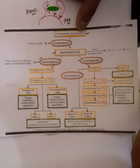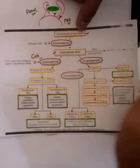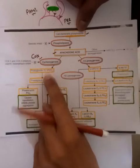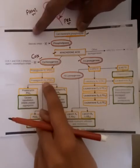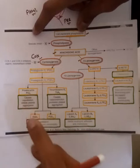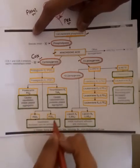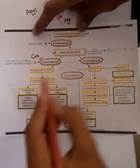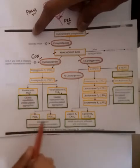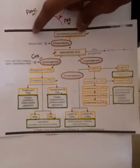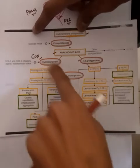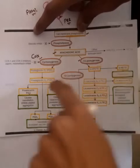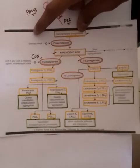The cyclooxygenase (COX) enzyme converts arachidonic acid into prostaglandin G2, which is converted into prostaglandin H2. Prostaglandin H2 is then converted into prostaglandin I2 (prostacyclin), prostaglandin D2, prostaglandin E2, and thromboxane A2. These four mediators are formed from prostaglandin H2 via the COX pathway.